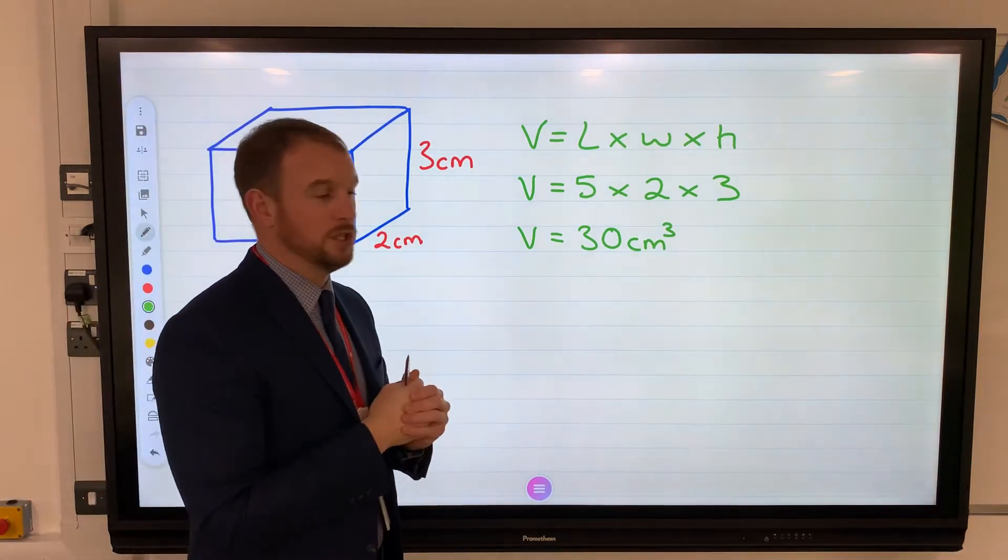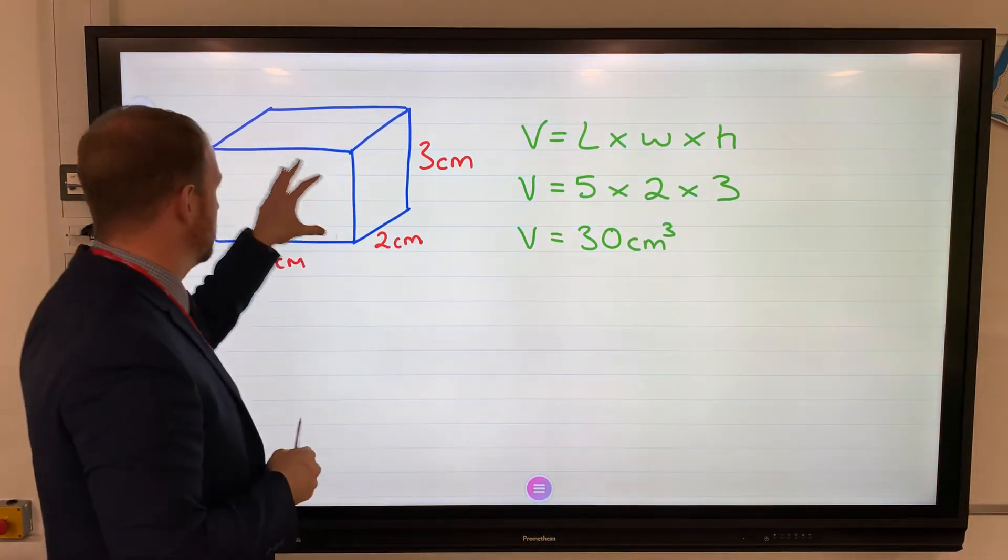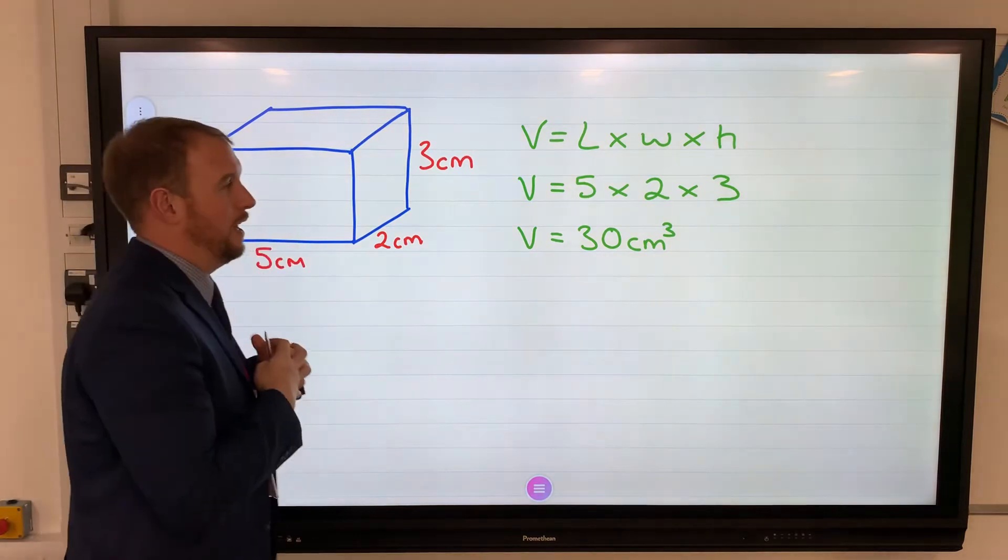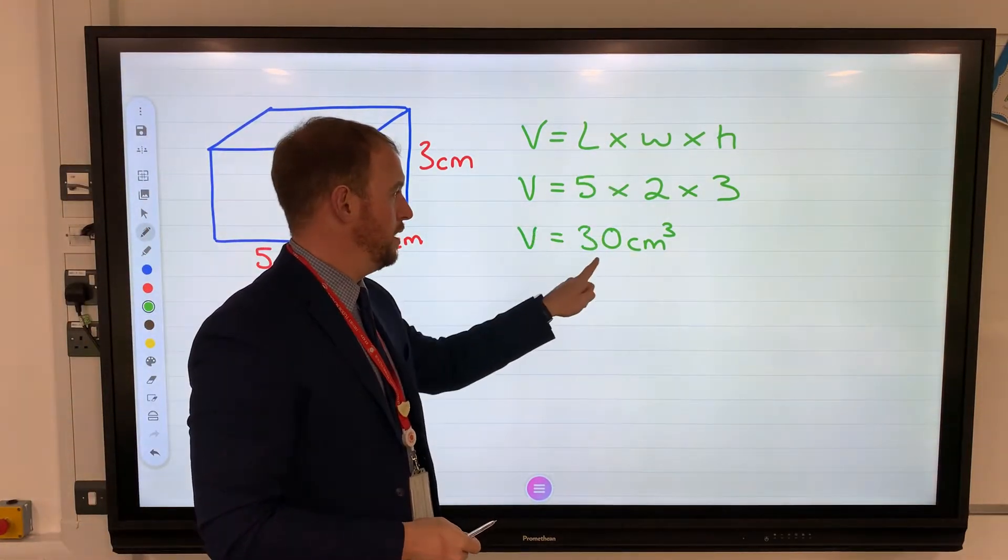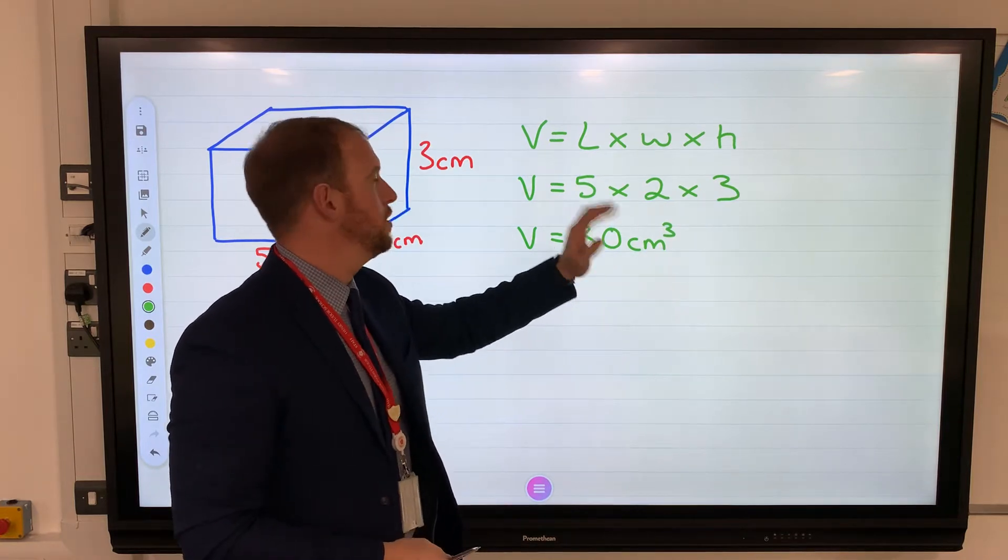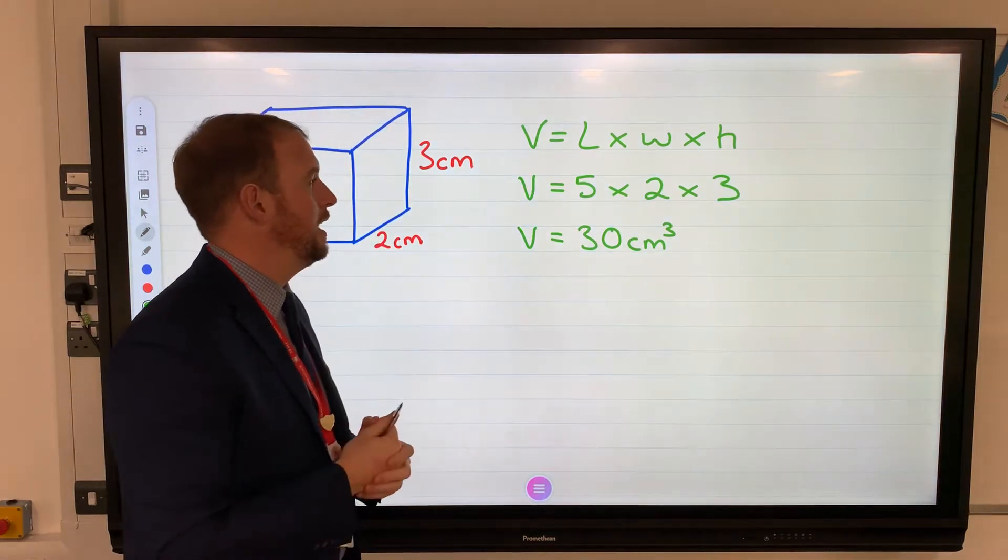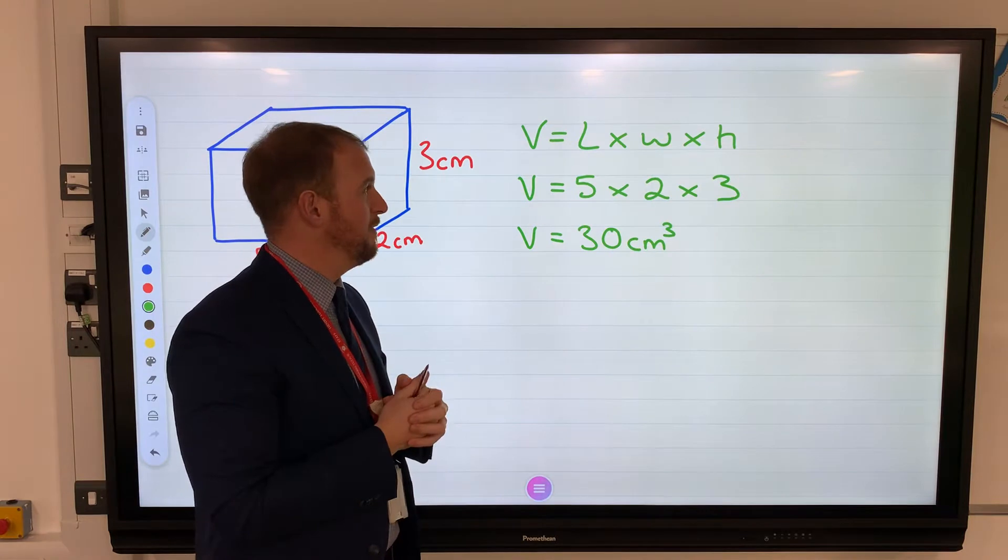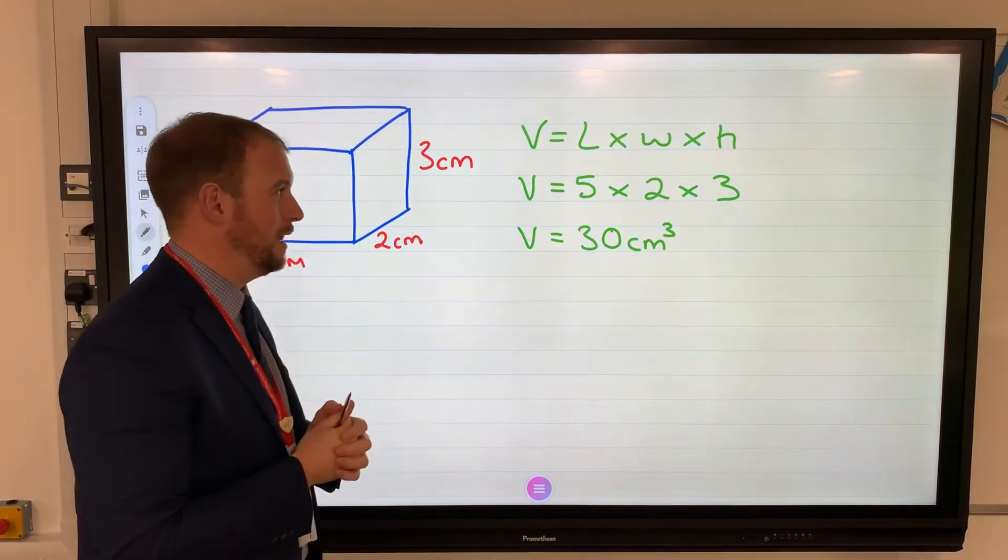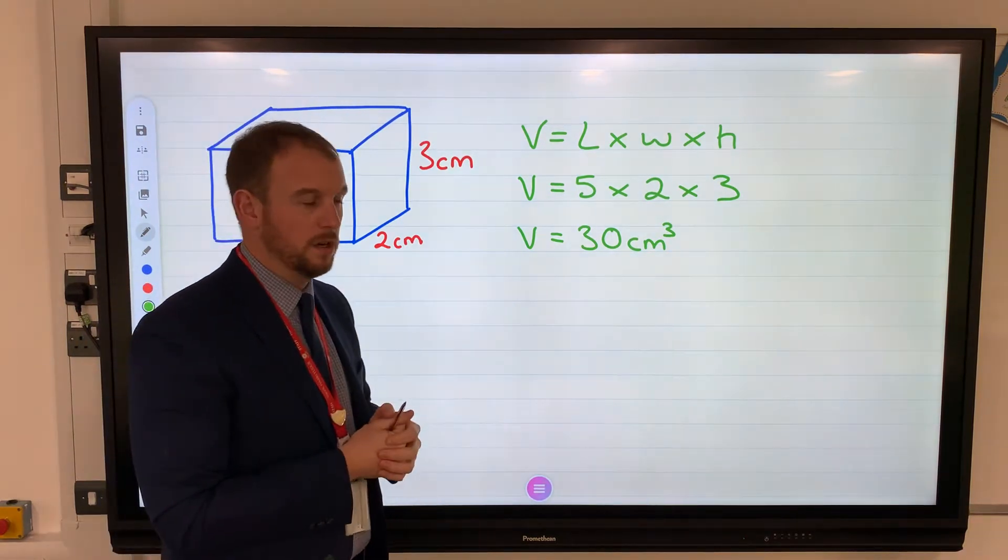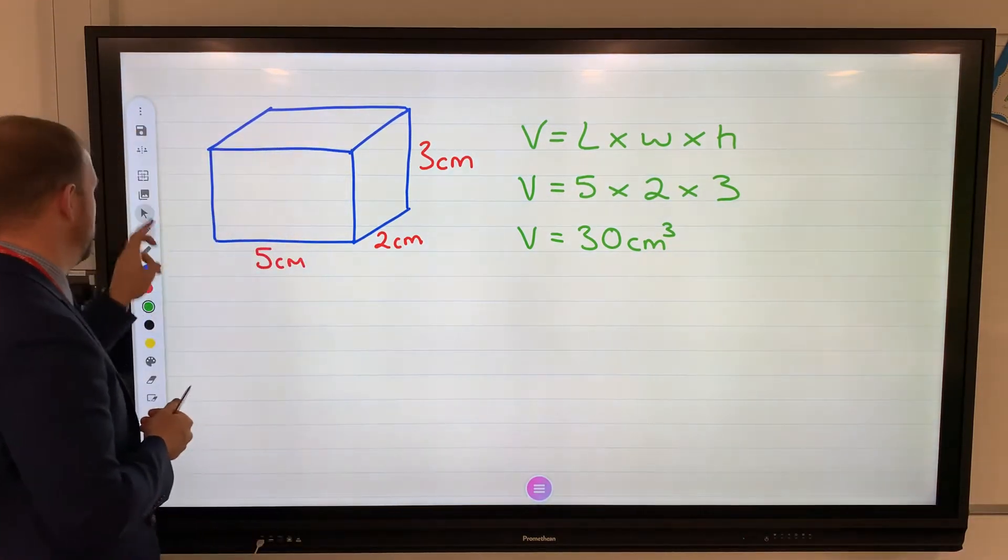It is the total space inside that 3D shape. So formula, substitution, answer, units. You will notice my equal sign is in a line. It's a bit of algebra really. As long as you know the formula and clearly set it up like that, you can't go far wrong. That's a cuboid.